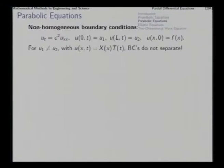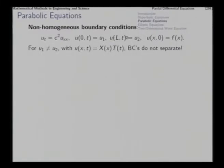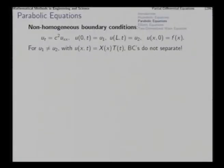In this case we had homogeneous boundary conditions. If the boundary condition is non-homogeneous — say u equals U1 at x equals 0 and u equals U2 at x equals L — and if U1 and U2 are unequal, the boundary conditions do not separate when we try to apply separation of variables. This stops the problem from being directly separable.